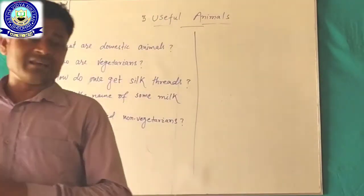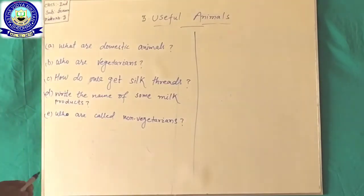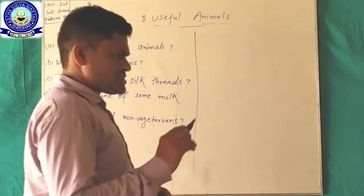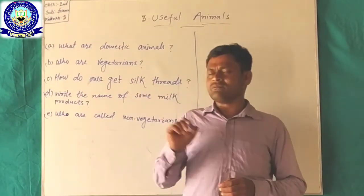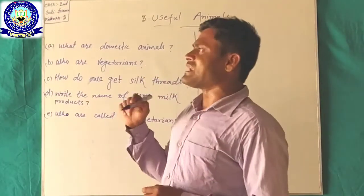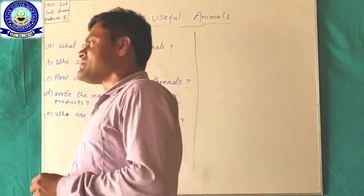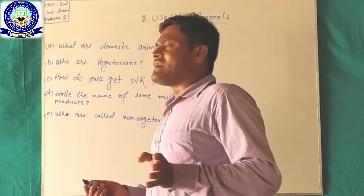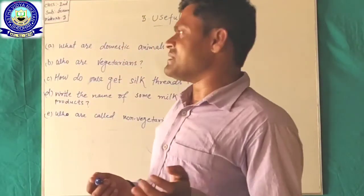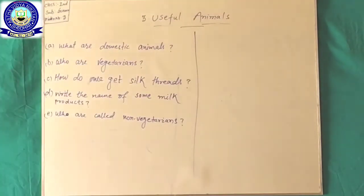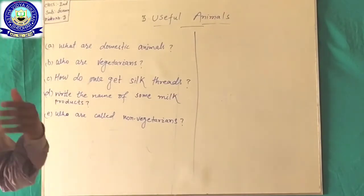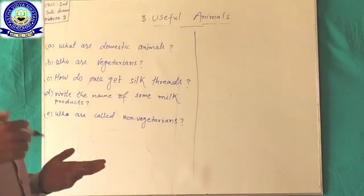My definition: what are domestic animals, what are wild animals, what are pet animals? First of all, we have to discuss wild animals. Animals that live in the jungle are called wild animals. Second, domestic animals: animals that we keep near our house or on a farm are called domestic animals.